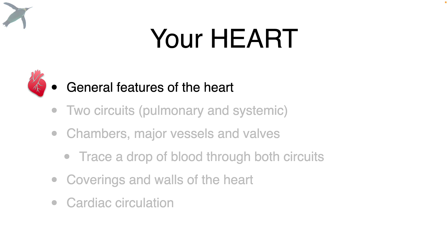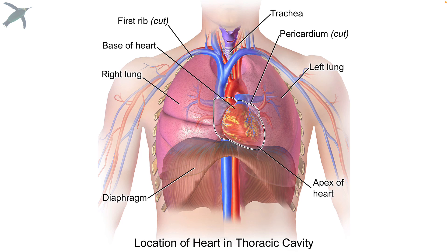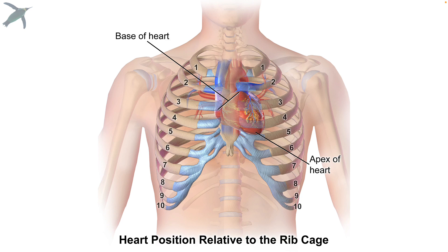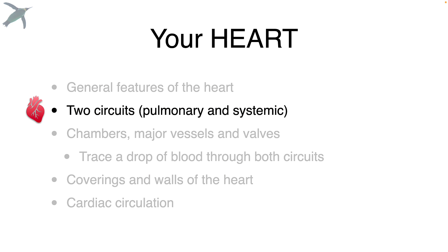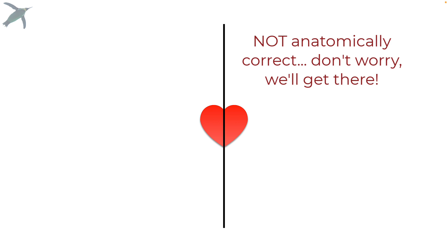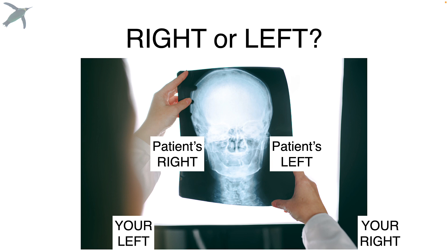Let's start with some general features. Most of you probably know the heart skews to the left in the chest cavity, and here it is in relation to the rib cage. Like all other mammals and birds, we have a four-chambered heart, and this allows us to have two separate circuits. We divide the heart into right and left sides — remember, it's the subject or the patient's right and left side, not yours.